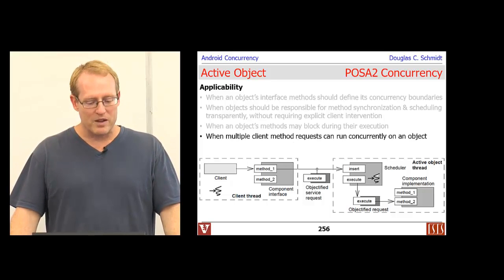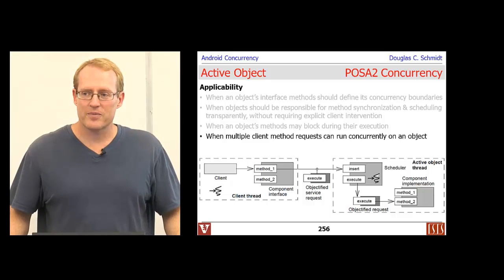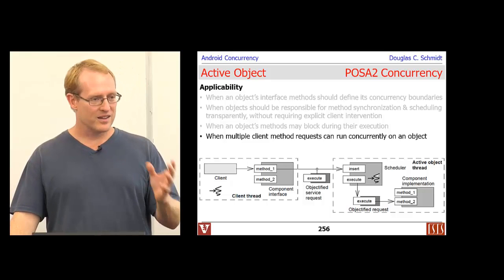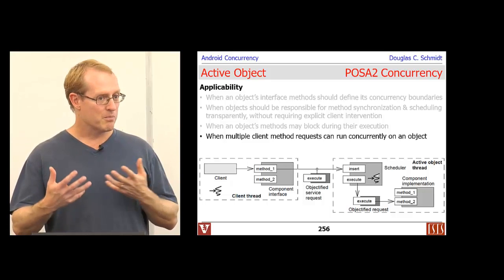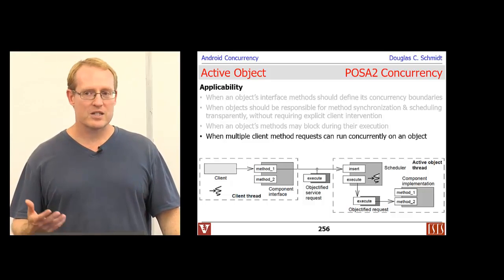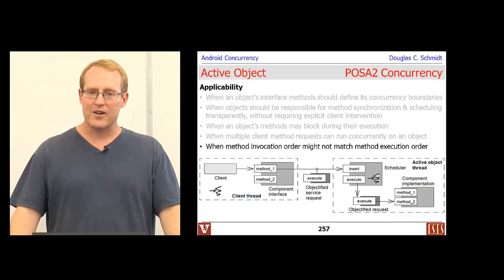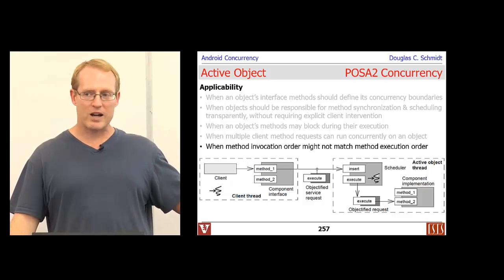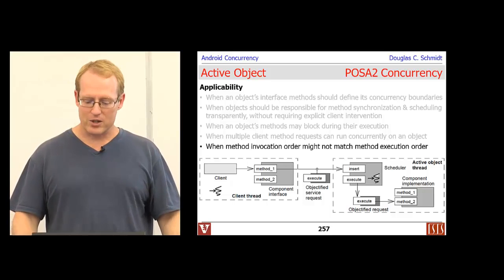Other important factors: you may want to have multiple client method requests running concurrently on a single object. This is different from monitor object — the monitor object only lets one method run at a time, locking out everyone else. With active object in some configurations, you can have multiple method requests running simultaneously, subject to synchronization or scheduling constraints. Another thing you might want is to allow the invocation order to differ from the execution order, due to scheduling constraints, timing properties, and priorities.